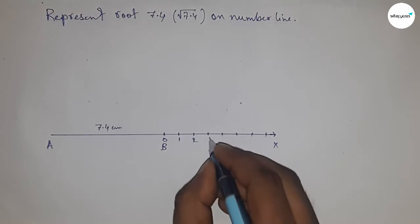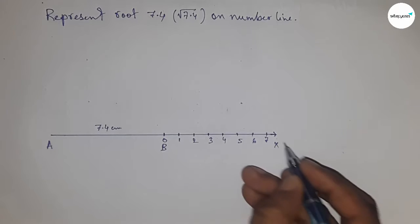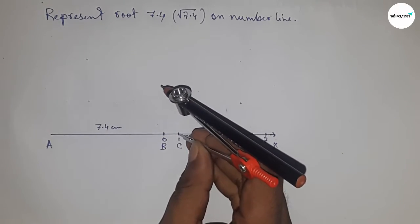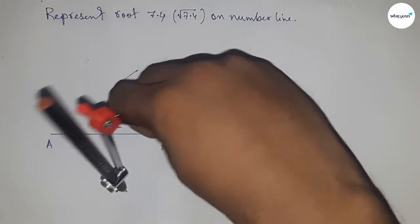Marking 0, 1, 2, 3, 4, 5, 6, 7 and so on, taking this as point C. Next, bisect the line AC by putting the compass here and taking greater than half of AC.